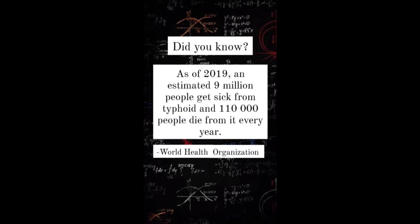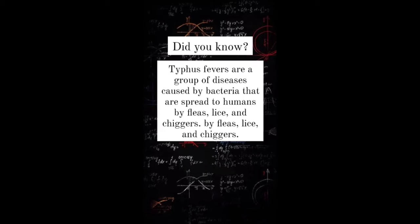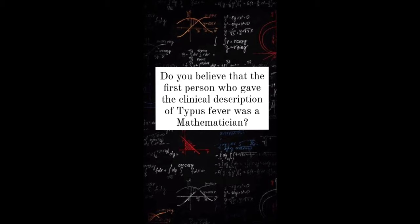As of 2019, an estimated 9 million people get sick from typhoid and 110,000 people die from it every year. Typhus fevers are a group of diseases caused by bacteria that are spread to humans by fleas, lice, and chiggers. Do you believe that the first person who gave the clinical description of typhus fever was a mathematician?